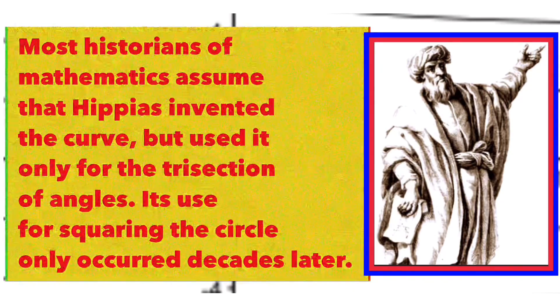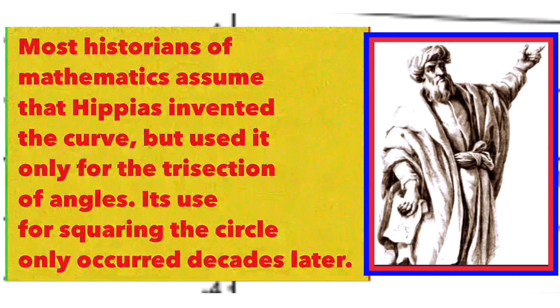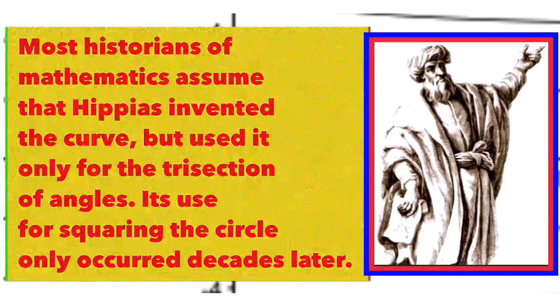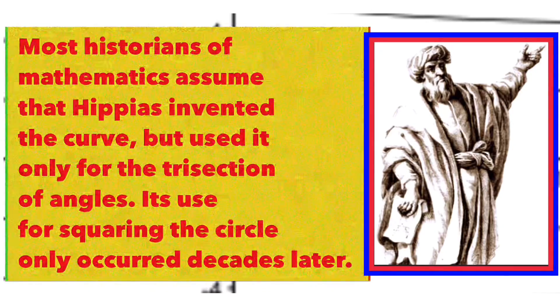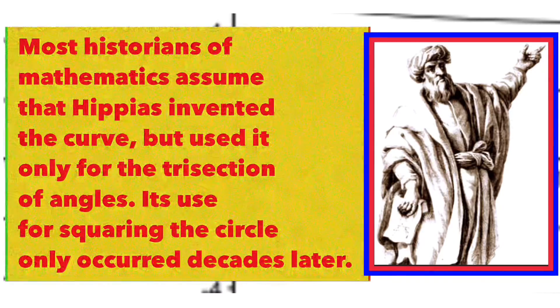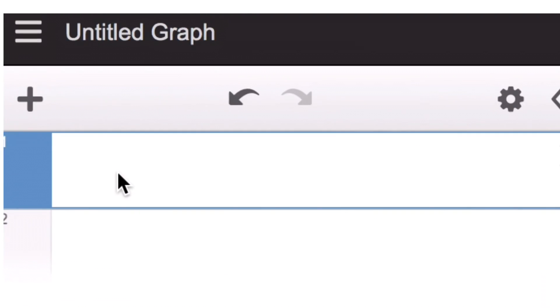Its use for squaring the circle occurred decades later. Now let's go over the equation and the shape of the graph of the quadratrix of Hippias, both in the Cartesian coordinate plane and in the polar coordinate plane. The Cartesian equation for the quadratrix of Hippias is given by x equals y cotangent